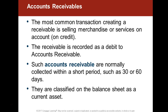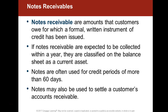Accounts receivable are short term, usually 30 to 60 days, and are a current asset on your balance sheet. A note receivable can be current — meaning one year or less — or it could be long term. The biggest difference between a note receivable and accounts receivable is that a note receivable generally has an interest rate attached to it. It is a formal written document, generally 60 days or longer.